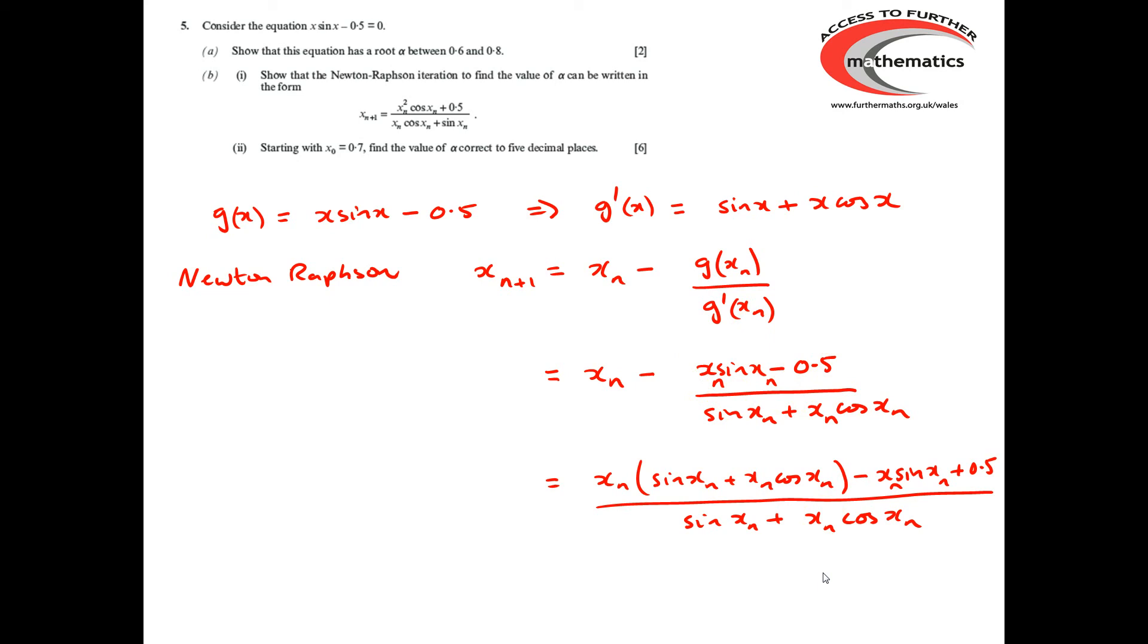If we multiply the brackets out, we'll notice the x_n sin(x_n) there cancels with the x_n sin(x_n) there. So all I'm left with is that term and that term. So we've got [x_n² cos(x_n) + 0.5]/[sin(x_n) + x_n cos(x_n)], which is the required formula.